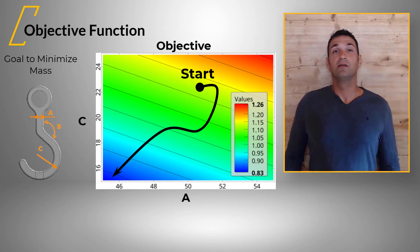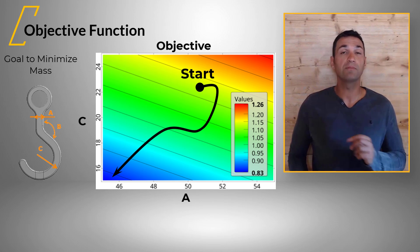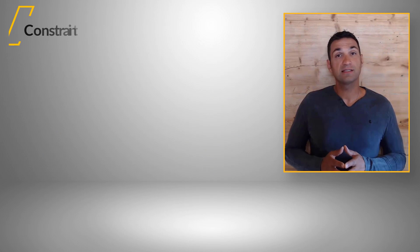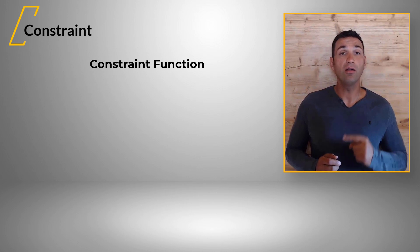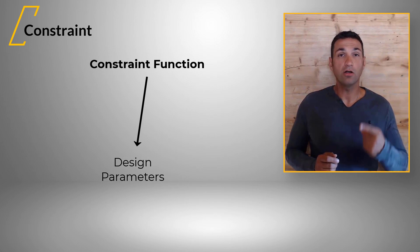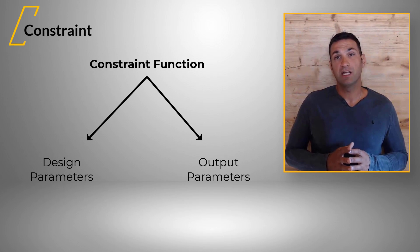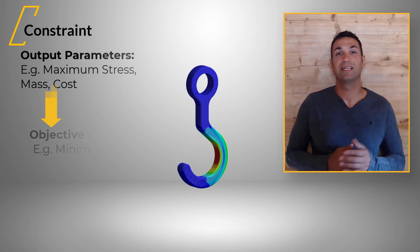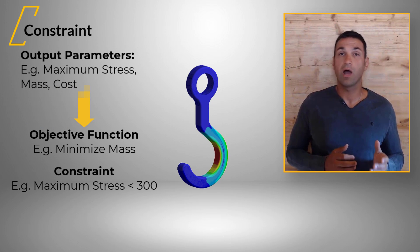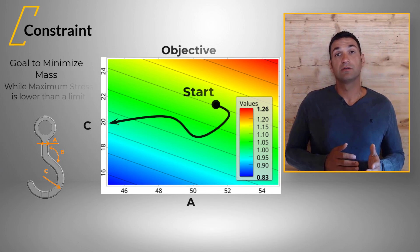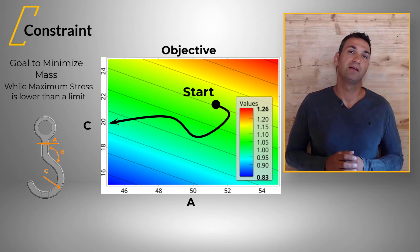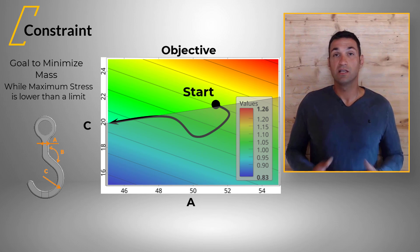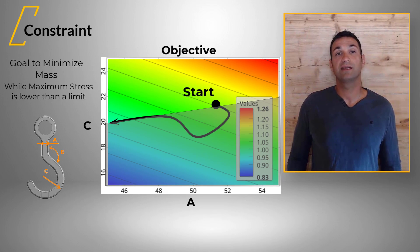In engineering problems, additional restrictions must often be fulfilled by the optimal design. They can be formulated with the help of a constraint. This is the third important term: constraint. The constraint function can represent limitations depending only on the design parameters, but also on output parameters, and any combination of both. In our hook example, it might be keeping the maximum stress under a certain limit while we try to minimize mass. Certain parameter combinations may lead to a lightweight design but have a high stress above the constraint given. We are not interested in these areas of the design space, so we exclude them using the constraint, as illustrated with gray.